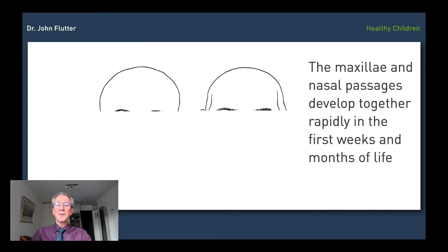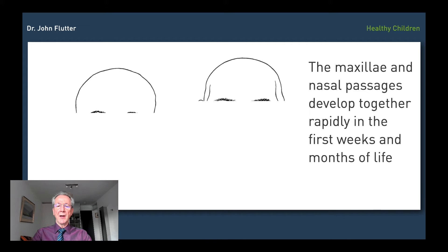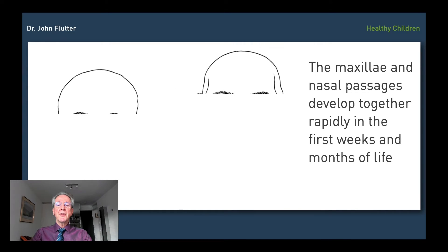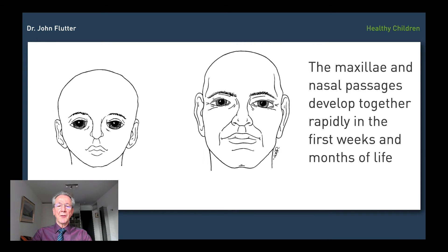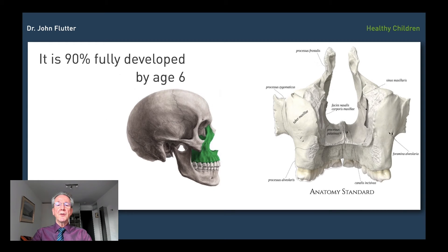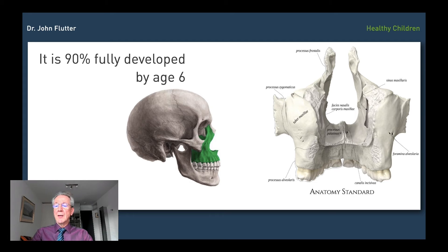The cranial vault is very largely developed at birth, but most of the development after birth is in the lower and middle thirds of the face. The growth and development of the maxillae is nearly fully developed by the age of six. And this structure — this upper jaw — not only contains the teeth, but it also encircles the nasal airway.